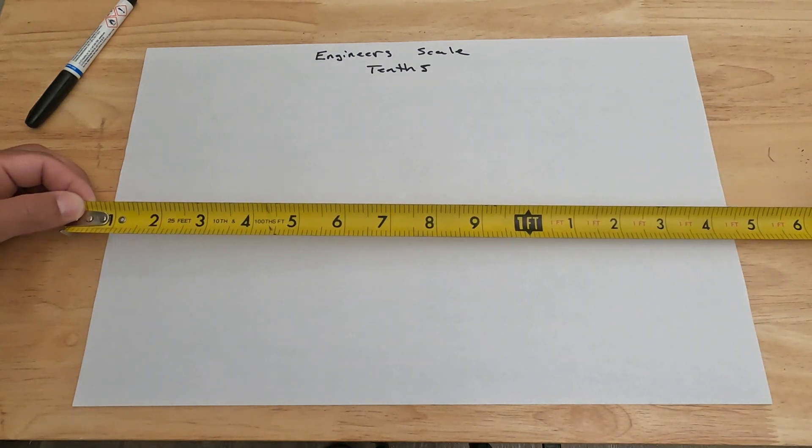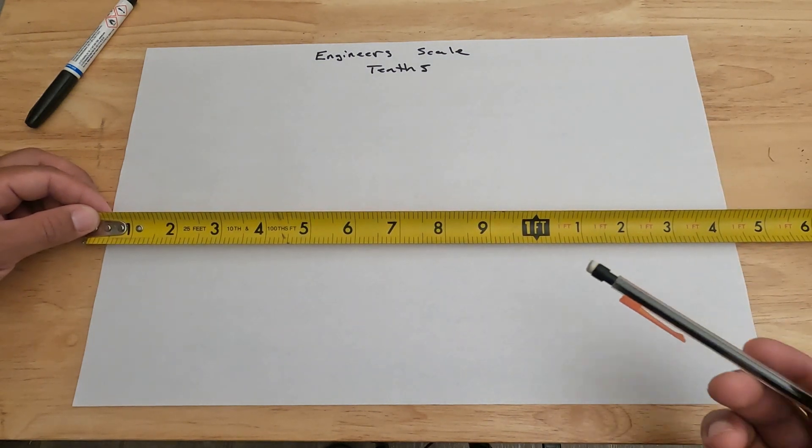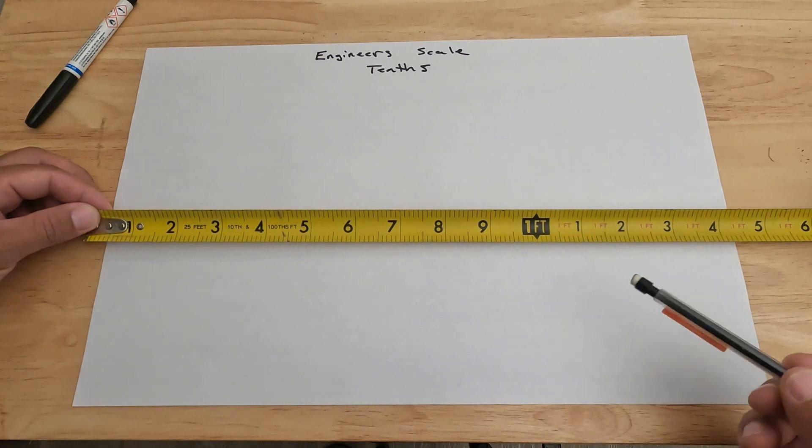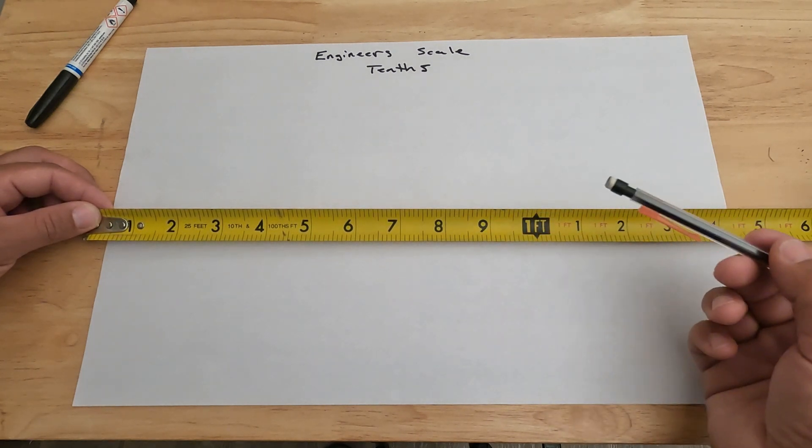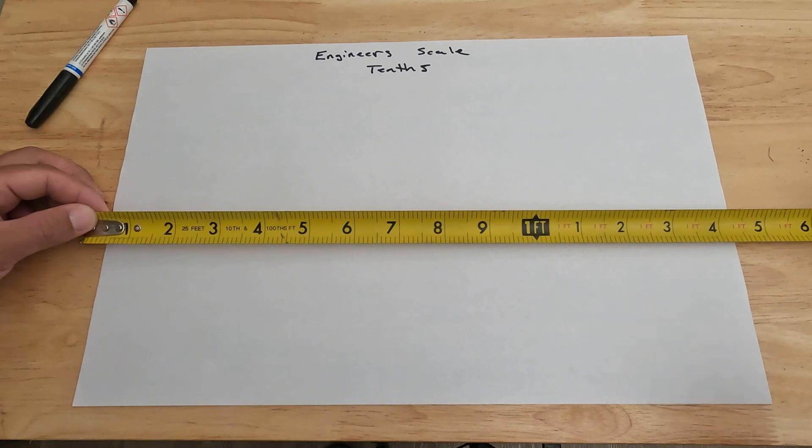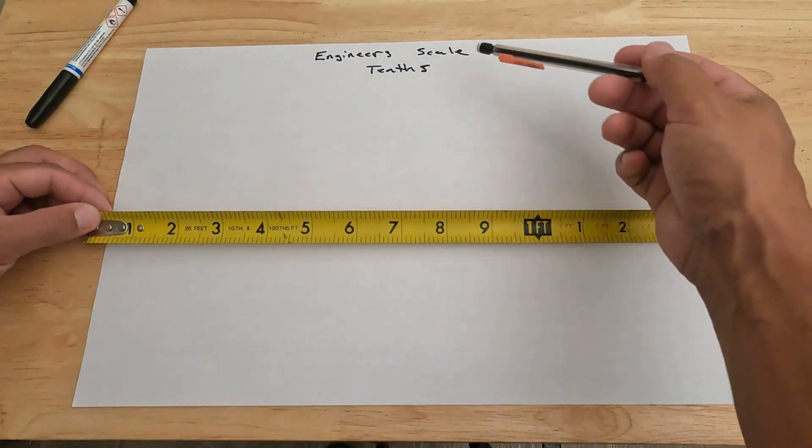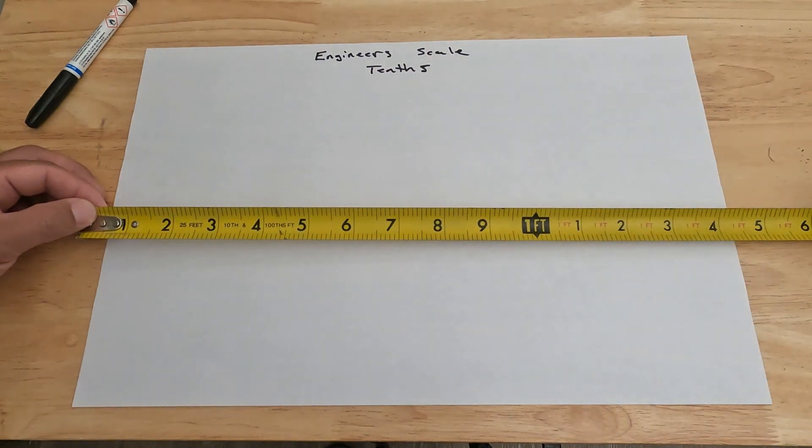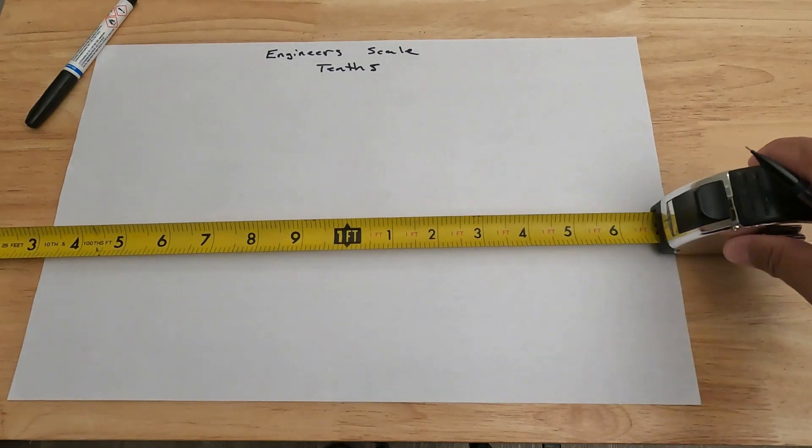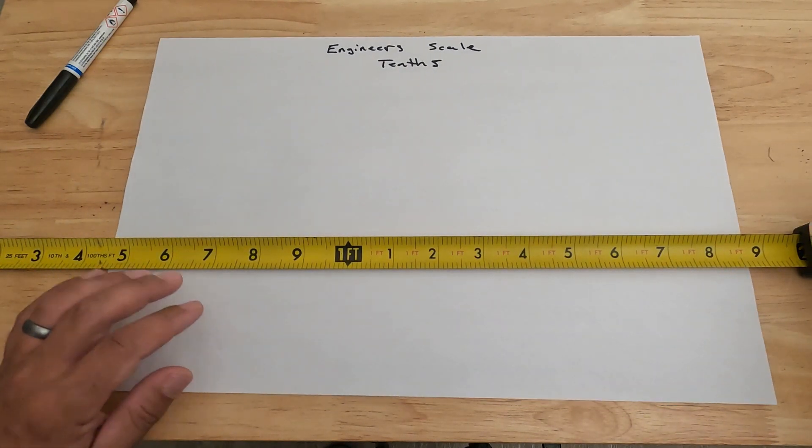That's the simplest, easiest way I can explain the difference between the two. A tenth is larger than an inch. So for the purposes of this video, we're just going to be focusing on tenths, and they call it engineer scale.